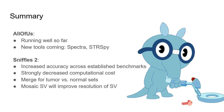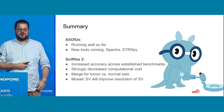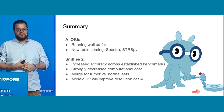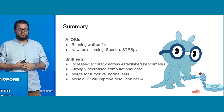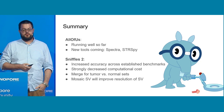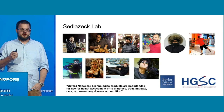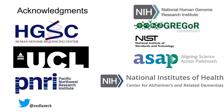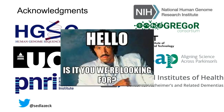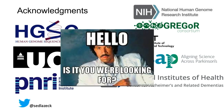To sum up: All of Us is up and running and going really nicely. New tools are coming out of my lab. Sniffles 2 has increased accuracy across established benchmarks, strongly decreases computational cost for structural variant calling, and can therefore scale. Merging of tumor versus normal sets works really well, and mosaic SV calling will improve resolution of low-frequency SVs. I want to thank my lab — especially Moritz and Louis — who drove this project forward, as well as HGSVC, UCL, PNRI, and funders. If you're interested in collaborations or joining my lab, please reach out.